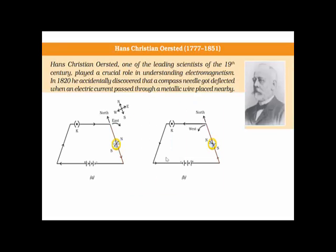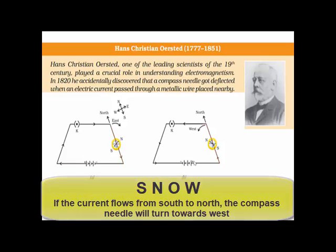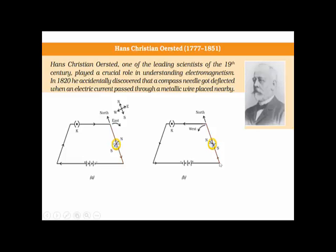This picture is already drawn in your book and is exactly what I have explained. Look at picture B here. This is the positive and negative end of the battery. The current flows from positive, through the conductor, and back to the negative end. The current is going from south to north, and the compass needle flicks towards west. When the current reverses — flowing from north to south — the needle flicks towards east.